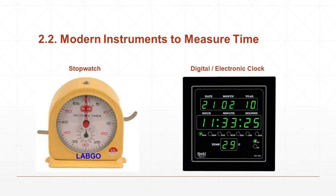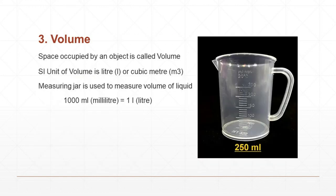Next, we are going to learn about volume. The definition for volume is space occupied by an object is called volume. The SI unit of volume is liter or cubic meter. Measuring jars are used to measure the volume of liquid. 1000 milliliter is equal to 1 liter.